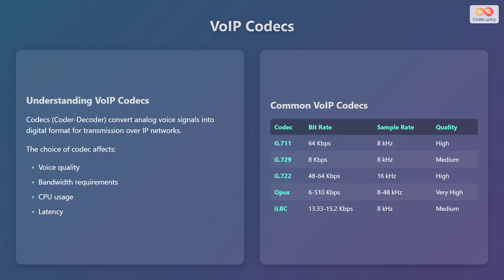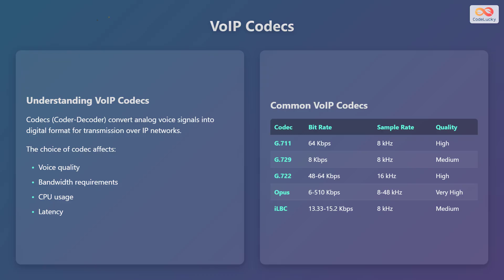Common VoIP codecs include: G.711, which offers high-quality audio at 64 kbps with an 8 kHz sample rate; G.729, providing medium-quality audio at 8 kbps with an 8 kHz sample rate; G.722, delivering high-quality audio at 48–64 kbps with a 16 kHz sample rate; Opus, which is highly versatile with bitrates from 6 to 510 kbps and sample rates from 8 to 48 kHz; and iLBC, offering medium-quality audio at 13.33–15.2 kbps with an 8 kHz sample rate.